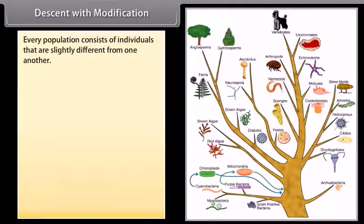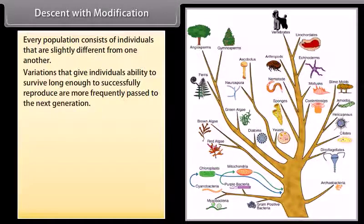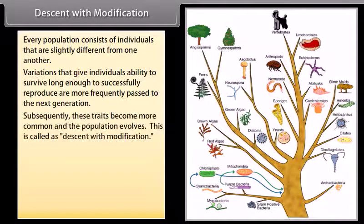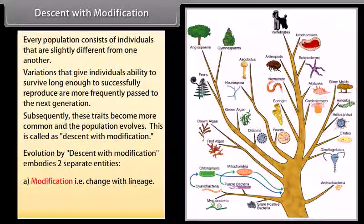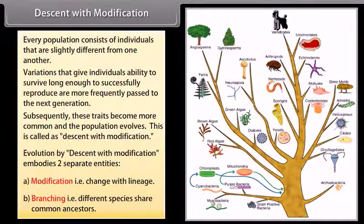Every population consists of individuals that are slightly different from one another. Variations that give individuals the ability to survive long enough to successfully reproduce are more frequently passed to the next generation. Subsequently, these traits become more common and the population evolves — this is called descent with modification. It embodies two entities: modification (change within lineage) and branching (different species sharing common ancestors).